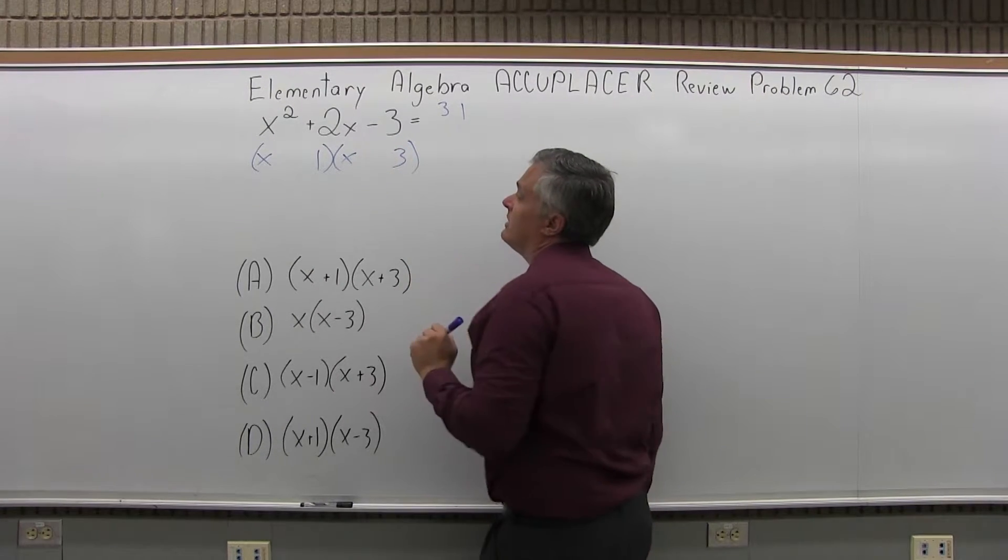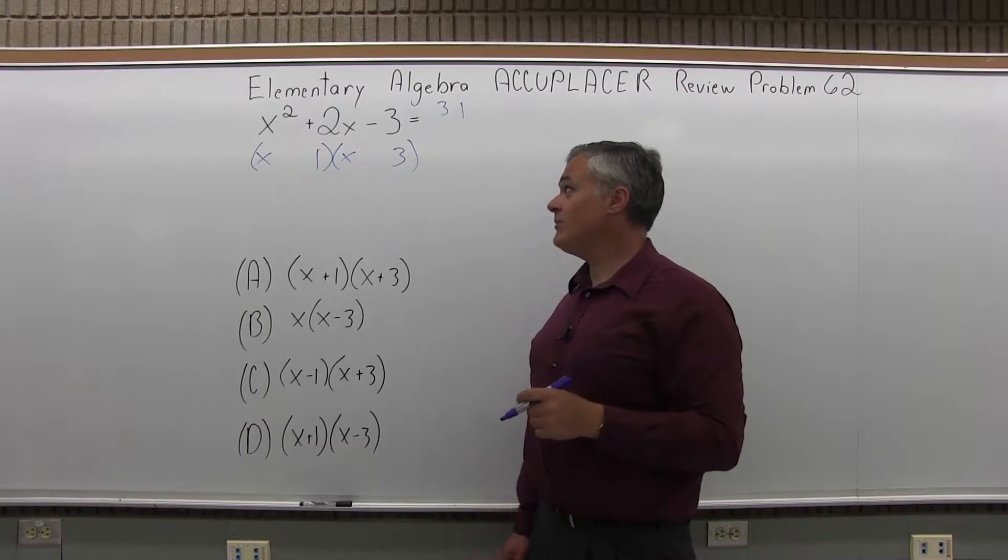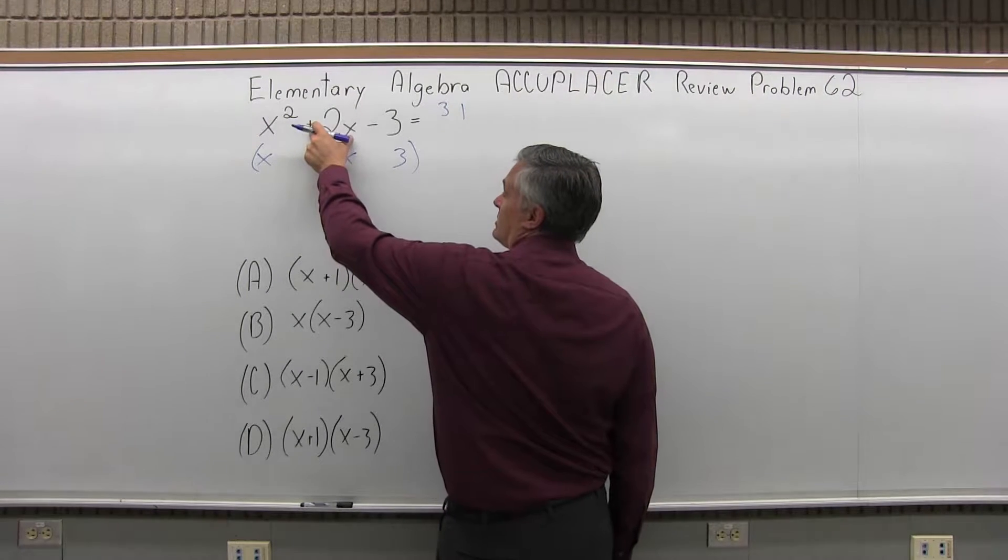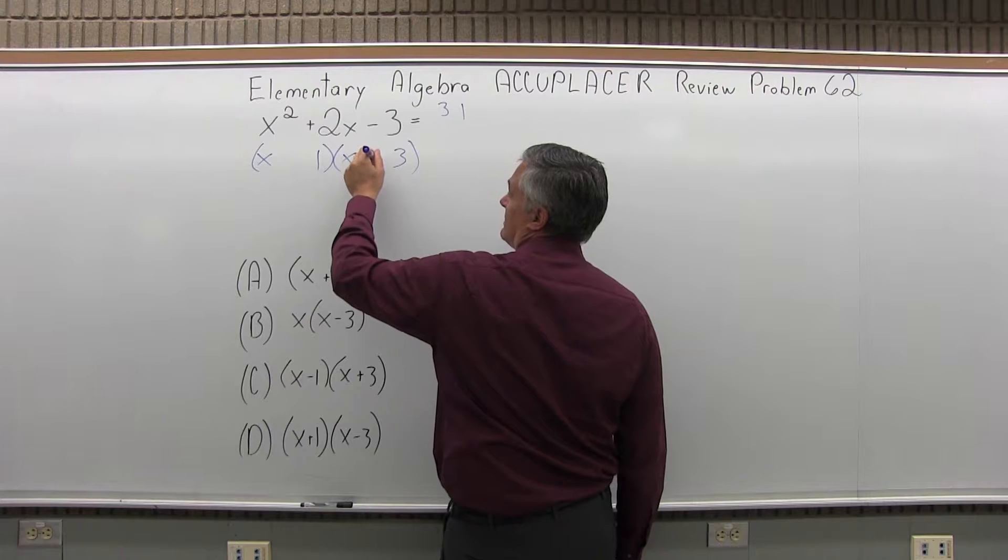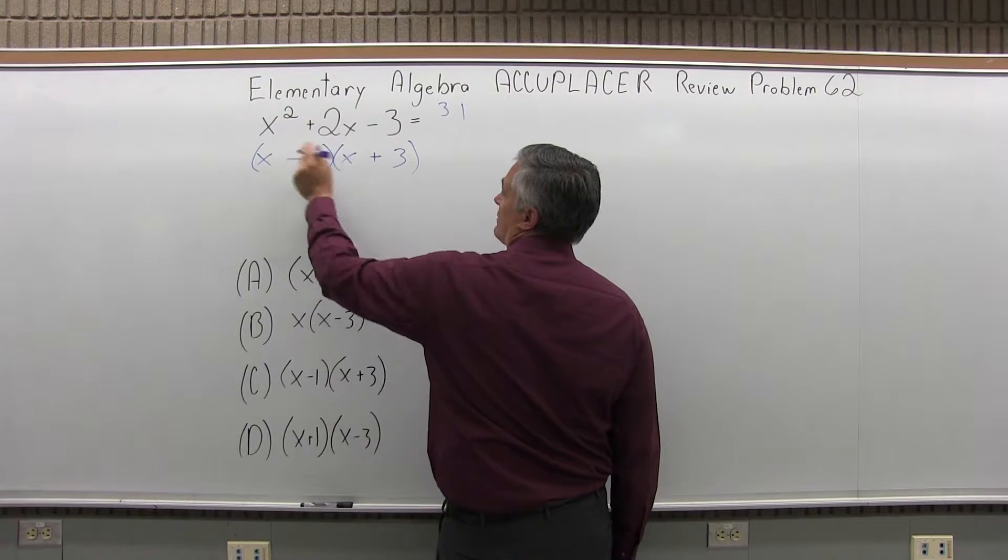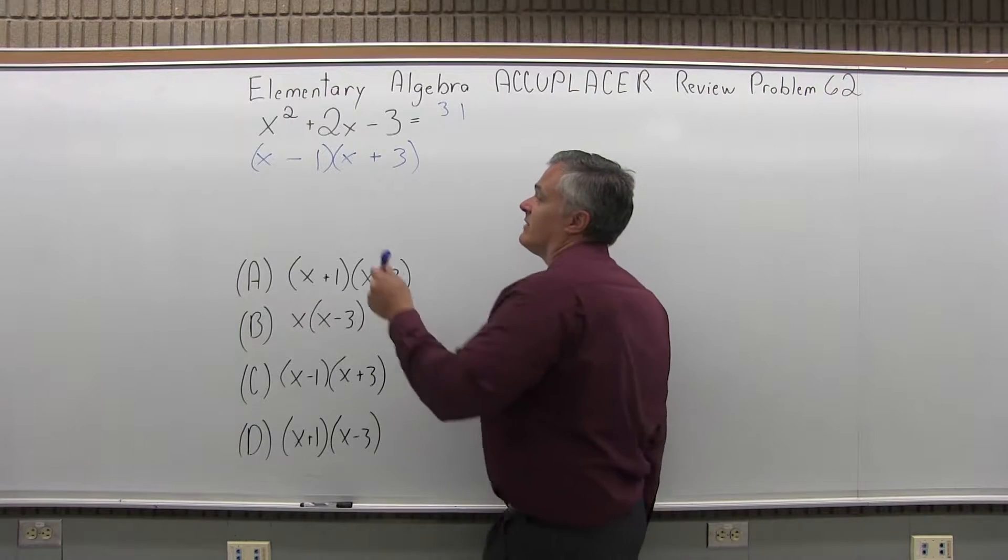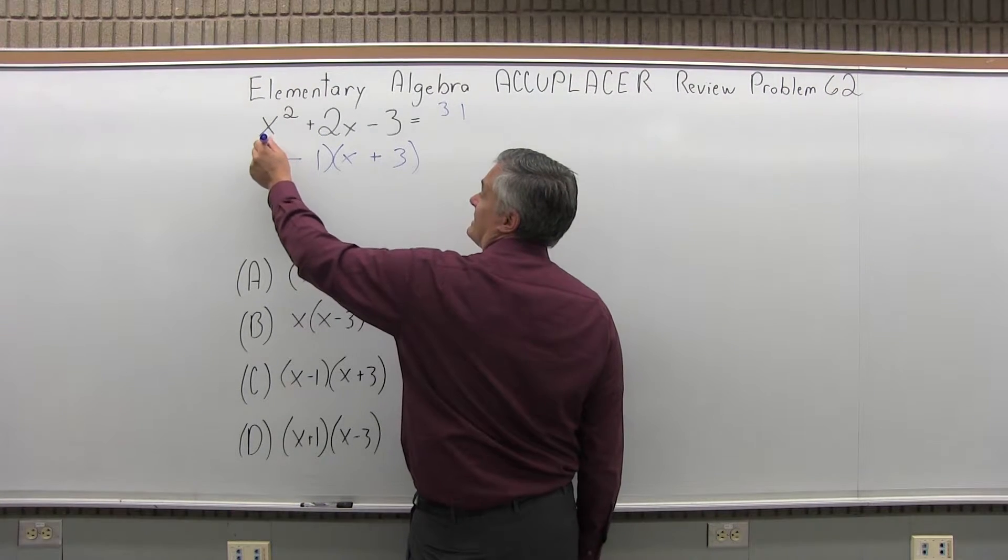So I can go 1, 3 and just watch the signs. And the 2x in the middle of the original problem is positive, so I'm going to make the larger factor have the plus in it. And now you can just check that to verify that that is the answer.